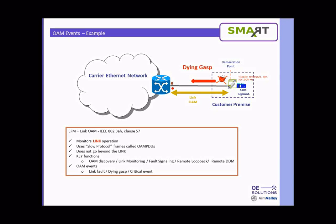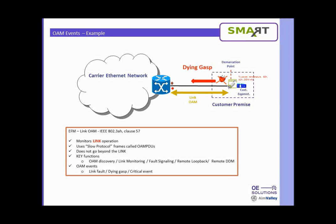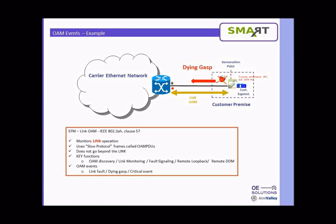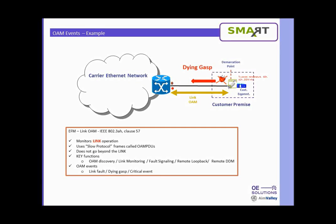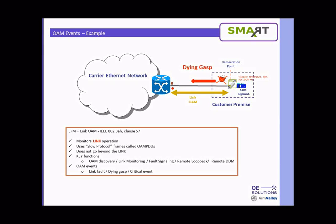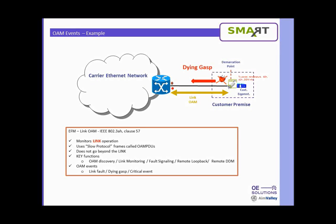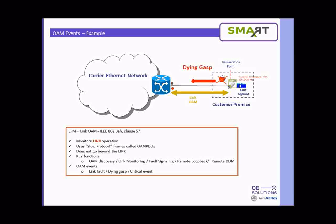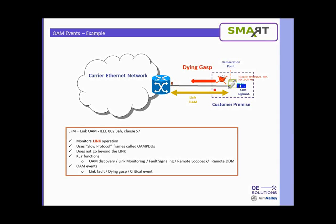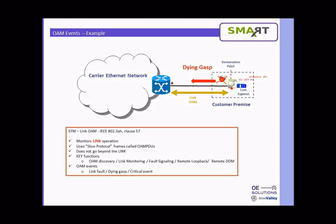For DDM functions, typically DDM information is only available locally on the board where the Smart SFP is located. But with this Smart SFP, you can actually access the DDM information from the remote side — this is the remote DDM functionality. The carrier Ethernet network side can pull the information from the Smart SFP, and all the information in DDM A0H and A2H can be accessed from the remote location.